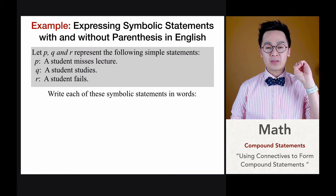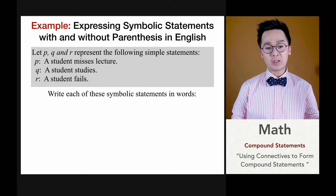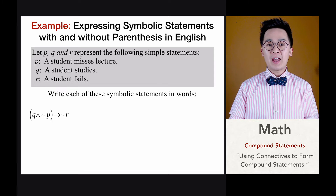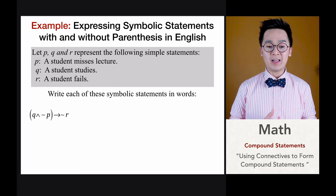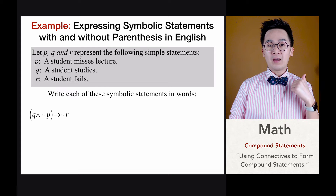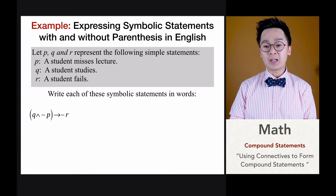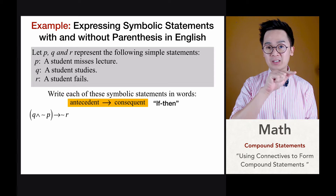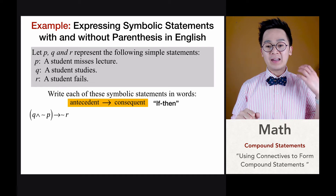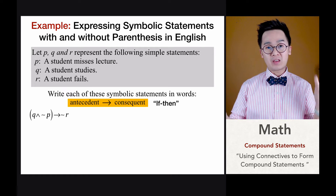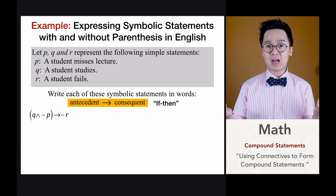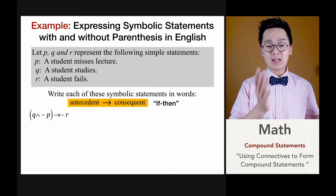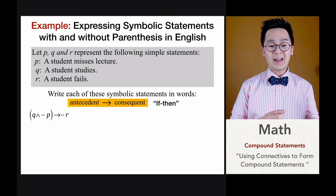Now let's say we have three basic statements: P — 'a student misses lecture,' Q — 'a student studies,' and R — 'a student fails.' For this more complex compound statement, we work on the dominant operation, which is the if-then conditional statement represented by an arrow. The arrow gives us an antecedent going towards a consequent, and inside the parentheses we have Q and ¬P.